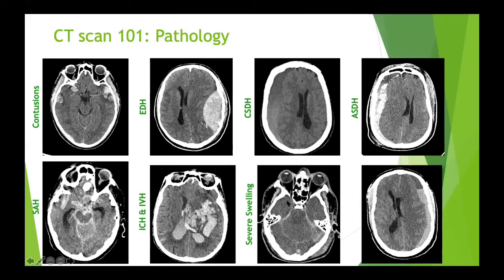This is an example of severe cerebral swelling - that architecture I've been going on about. You can't appreciate any gray-white matter differentiation, can't see sulcal markings, can't see the sylvian fissure, can't see the prepontine cisterns, can't even see the fourth ventricle. All CSF spaces have been squeezed out by this severe cerebral swelling.